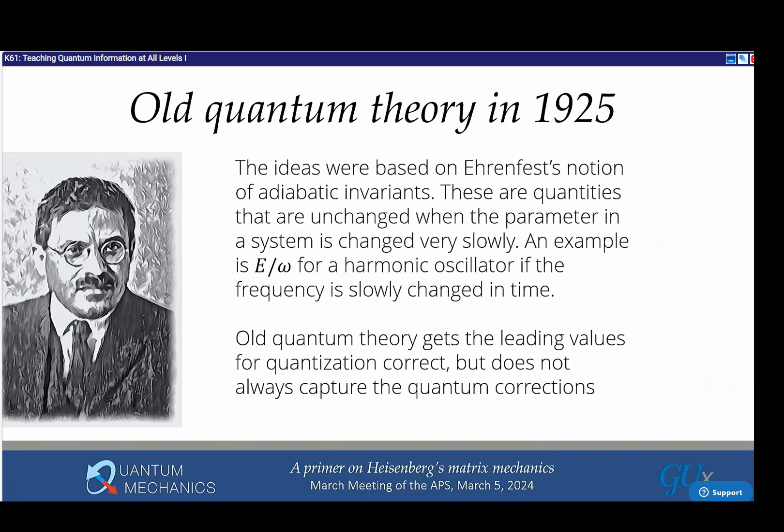The ideas were based on Ehrenfest's notion of adiabatic invariance. These are quantities that are unchanged when a parameter is changed very slowly. An example is a harmonic oscillator - if I slowly change its frequency, E over omega remains conserved. That's the thing that's quantized. If I set E/ω equal to h-bar times n, you get the energy of the harmonic oscillator is h-bar omega n. That's almost right.